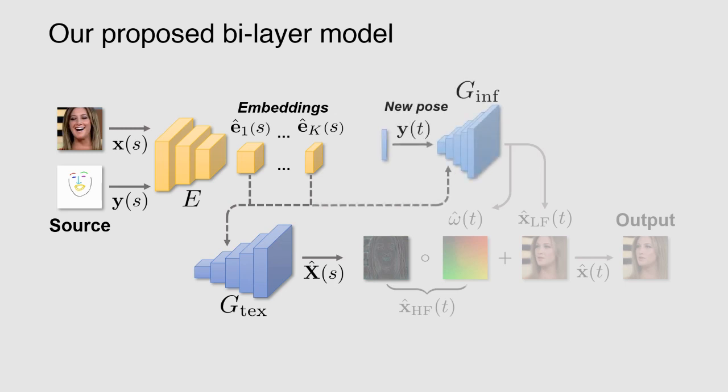The second part, called the inference generator, accepts pose and predicts a warping field for the texture alongside the low-frequency component of the output. Both the warping field and the low-frequency component have a much smaller complexity than the output image, which allows us to significantly reduce the size of the inference generator compared to the previous models which predicted an output image directly.